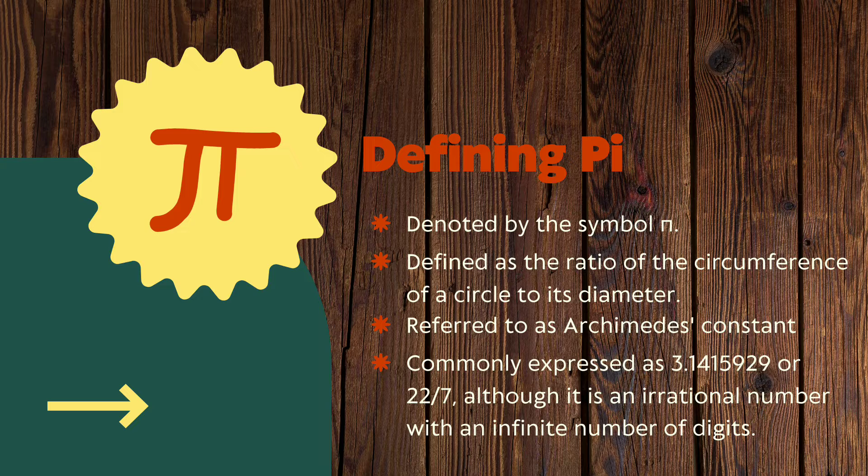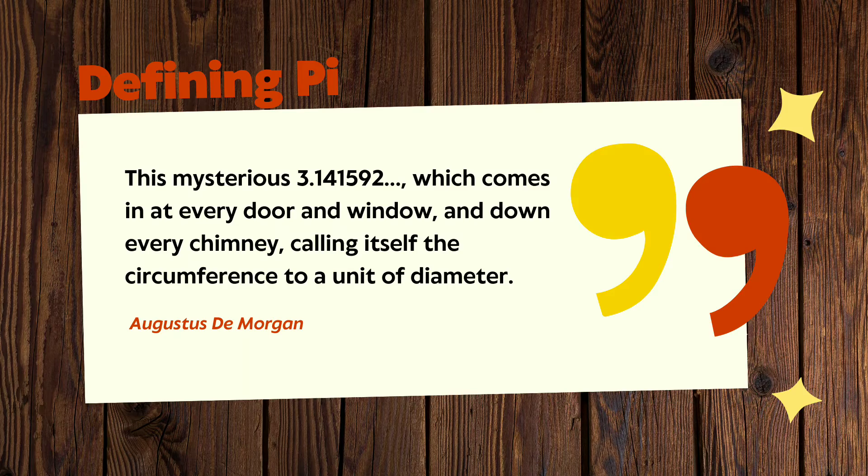According to Augustus DeMorgan, this mysterious 3.14159, which comes in at every door and window and down every chimney, calling itself the circumference to a unit of diameter.